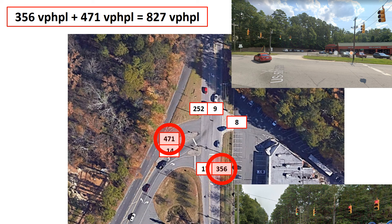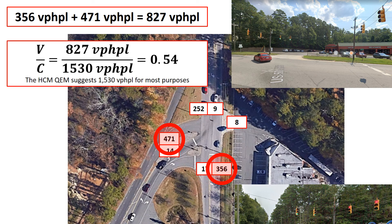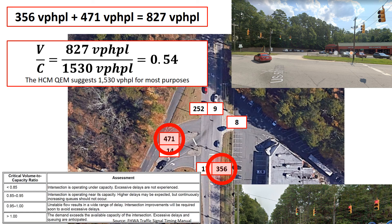We're going to add those two critical movements together: 356 plus 471 gives us 827 vehicles per hour per lane. We divide that by 1,530, and that gives us a volume-to-capacity ratio of 0.54. That's operating very well — well under capacity — and drivers at this signalized intersection should not be experiencing substantial delays.